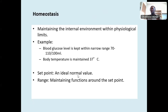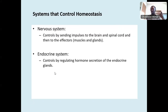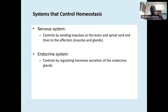There is a set point, which is the ideal point where it should be, and there is also a range. Your temperature, your blood sugar, your blood glucose, your blood pressure — all have a range. The nervous system controls homeostasis by sending impulses to the brain, then the spinal cord, and then to the effector. The endocrine system controls homeostasis by regulating hormone secretion of the endocrine glands.